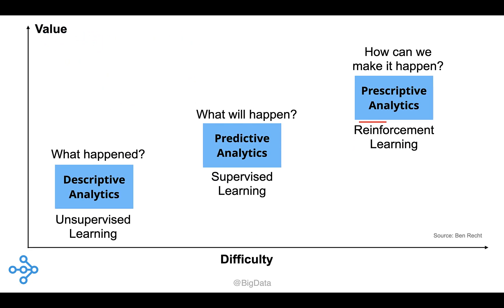While many data scientists routinely use unsupervised and supervised learning, not as many have experience with reinforcement learning. But in recent years, prominent examples of self-learning systems relied on reinforcement learning, and those success stories have made RL into a hot topic among AI researchers.